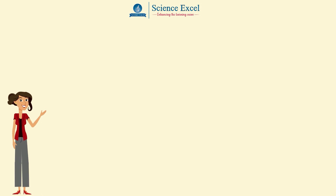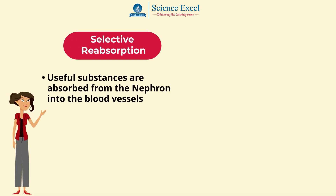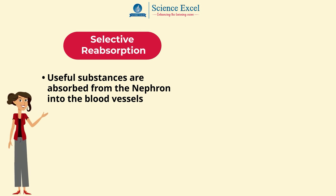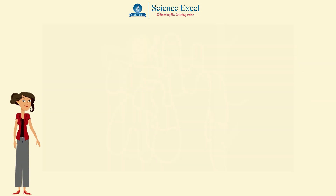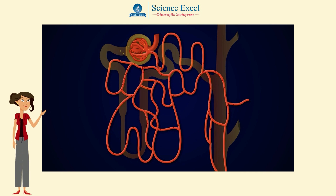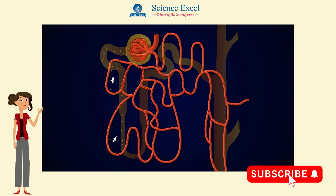The last step in the process of urine formation is called tubular secretion, which is the exact opposite of reabsorption. In selective reabsorption, useful substances are absorbed from the nephron into the blood vessels, whereas in tubular secretion, harmful substances are released from the blood vessels into the nephron. Tubular secretion involves the removal of metabolic waste substances from the blood capillaries and tissue and their active secretion by the tubular cells into the filtrate in the nephron.